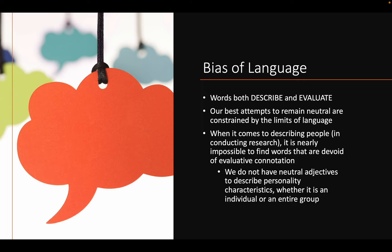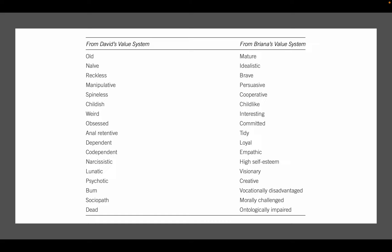Take the E in OCEAN — extroversion. You're either extroverted or introverted. You can be somewhere in the middle, but there's not really a word that describes that neutrality. This is what Table 2-1 in your textbook illustrates: two people using completely different perspectives to describe the exact same person. Notice how the words reveal each person's subjective point of view, and how our language ends up being biased.